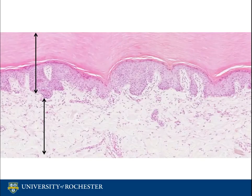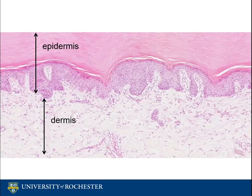The skin is the body's largest organ and is composed of several tissue types that together protect the body's internal structures. The skin is composed of two main layers: the epidermis, which is the outer layer, and a deeper layer called the dermis. Deep to the dermis there is a layer of adipose tissue called the subcutaneous layer or the hypodermis.